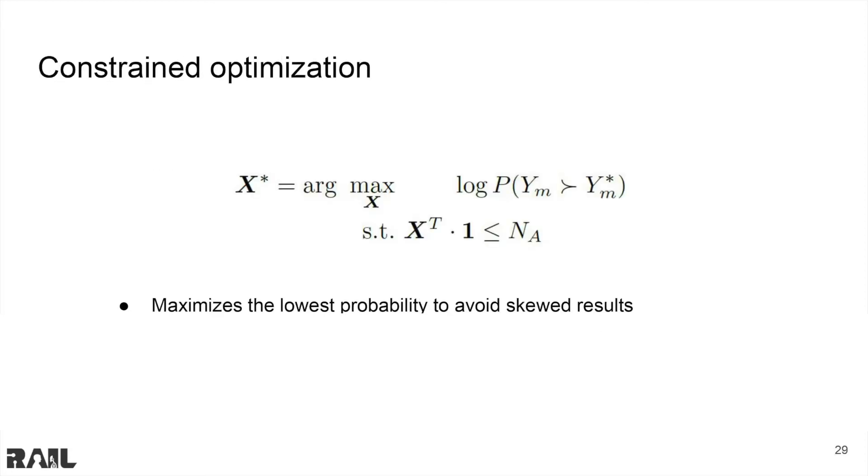With our framework, we can set up an optimization program that maximizes the probability of satisfying task requirements. Instead of maximizing all the task success probabilities at once, we look at the minimum task probability. This avoids disparate and skewed allocations.